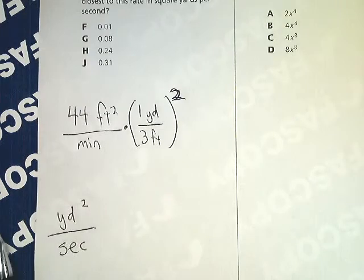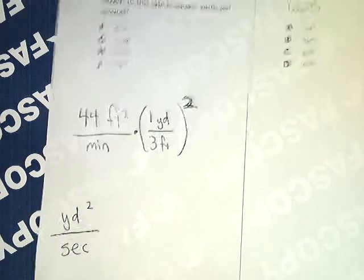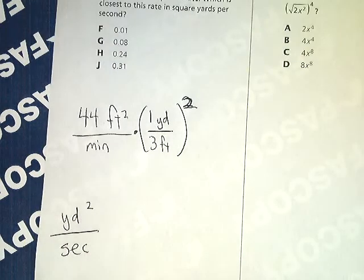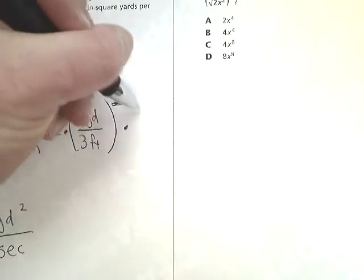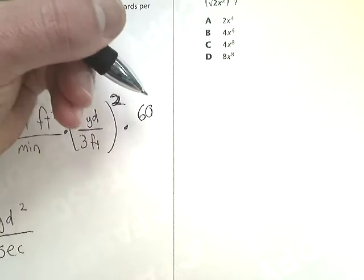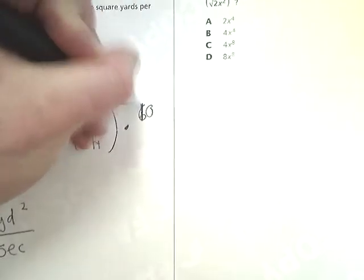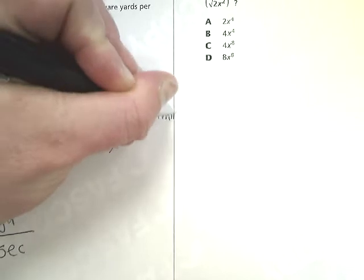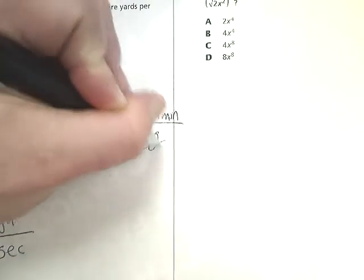Now I need to get the minutes to seconds. I know that a minute has 60 seconds. I want to eliminate minutes first, so one minute is 60 seconds.